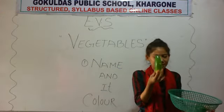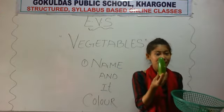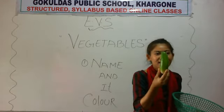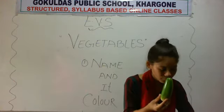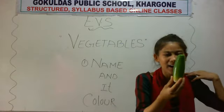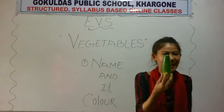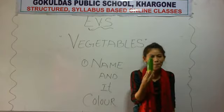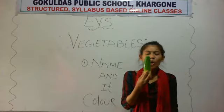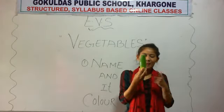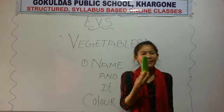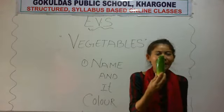What is this? Very yummy! You should always eat this cucumber. What is this? This is vegetable. And which vegetable is this? This is cucumber. And what is the color of cucumber? Green color.